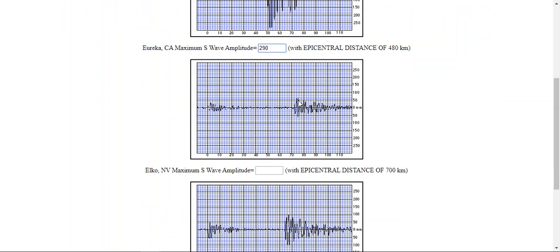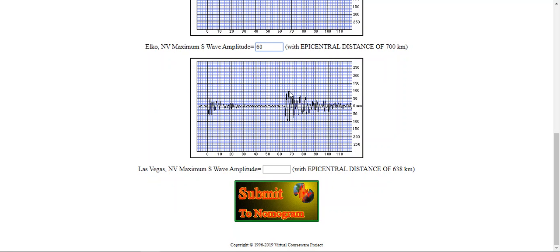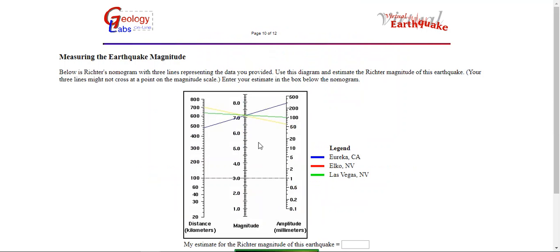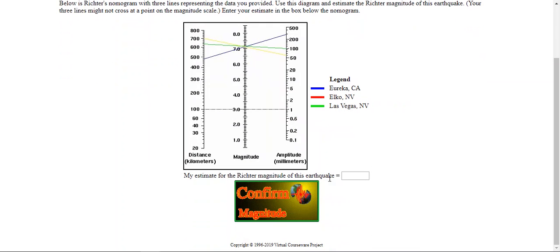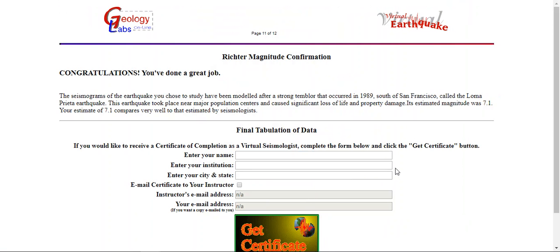The second one was just above 50, so this would be 60. And the last one was right on 100. You're going to notice that all three of our marks cross the magnitude right at 7.1. So I'm going to enter my magnitude as 7.1 and confirm my magnitude.